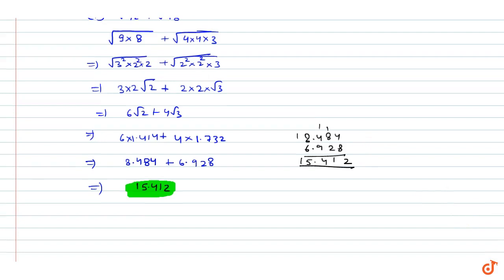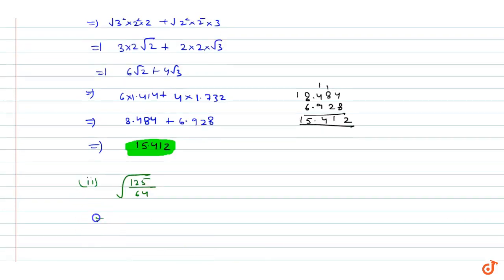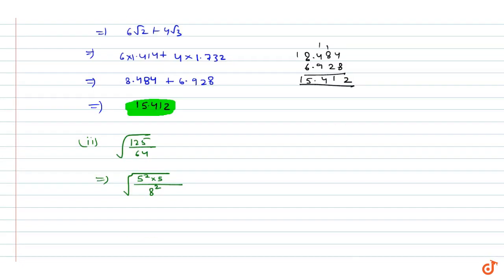Now let's solve the second question: find the value of under root 125 by 64. We can write this as root of 5 squared into 5 upon 64, which means 8 squared. Taking 5 out from the numerator and 8 from the denominator.